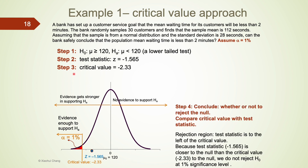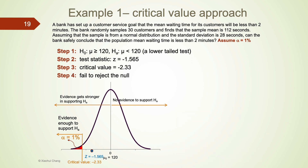In step 4 of the critical value approach, we compare the test statistic with the critical value to make a conclusion about whether or not to reject the null. Our test statistic is negative 1.565, and the critical value is negative 2.33. Because our test statistic is not as far from the null as the critical value, we do not reject the null at the 1% significance level. Therefore, we fail to reject the null for this particular example. The conclusion in hypothesis testing is either to reject the null or not to reject the null. We will not say we have found enough evidence to accept the null, because the null can never be truly proven.